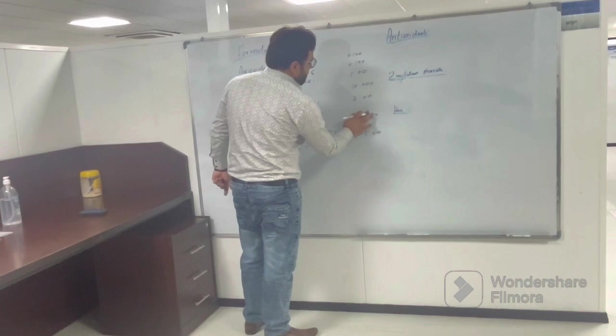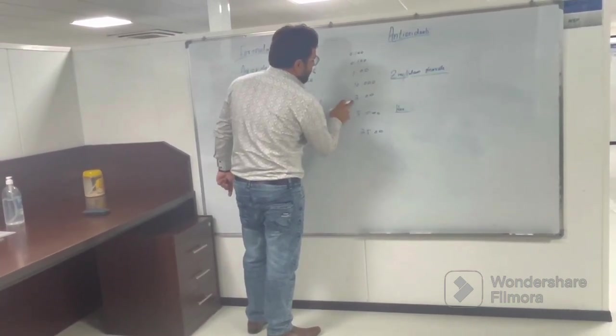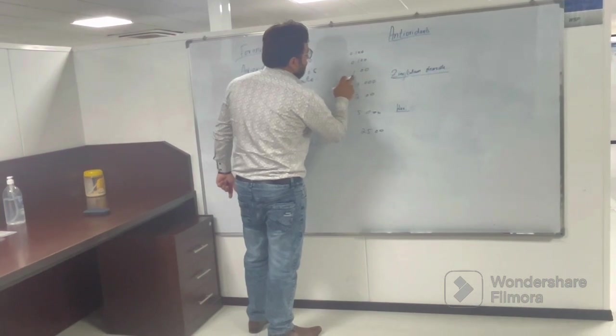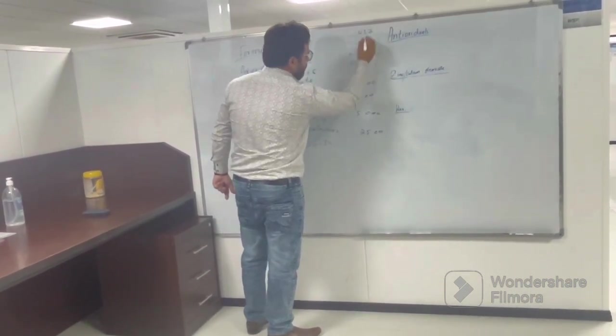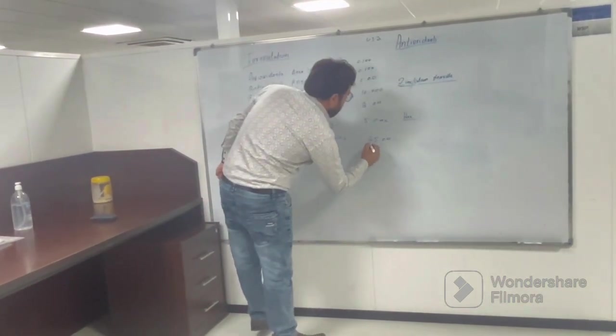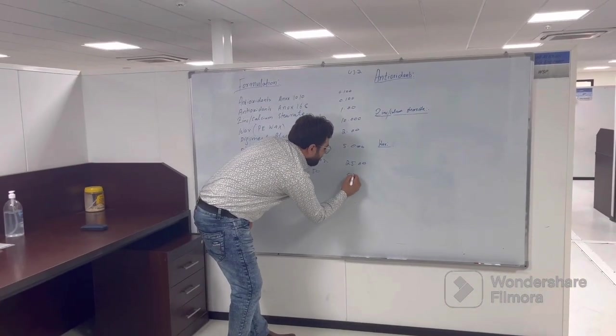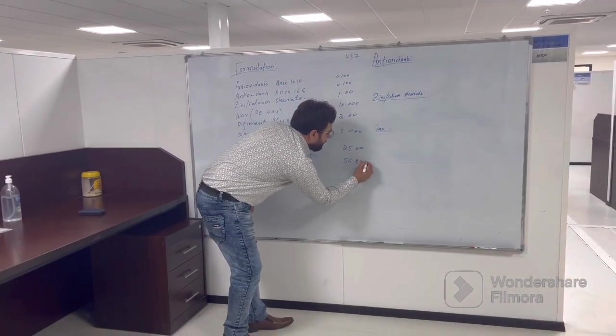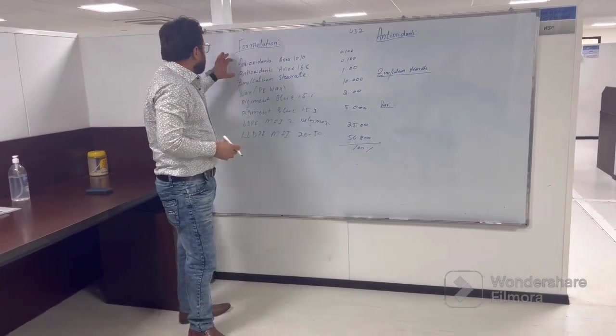So 25, this will be 0.25, 5, 30, 32, 42, 43, 43.2. Then the rest you have to use, so 56.8 will be LDB. So this total will make 100%.